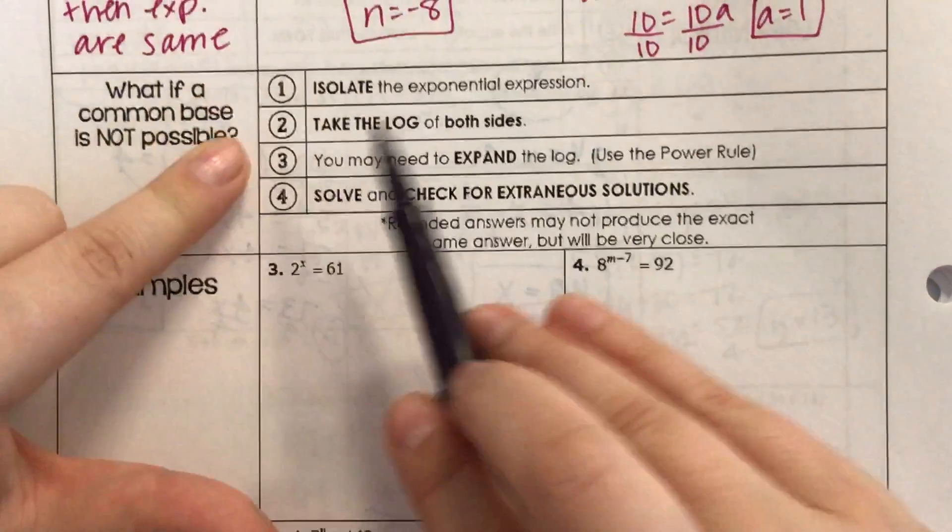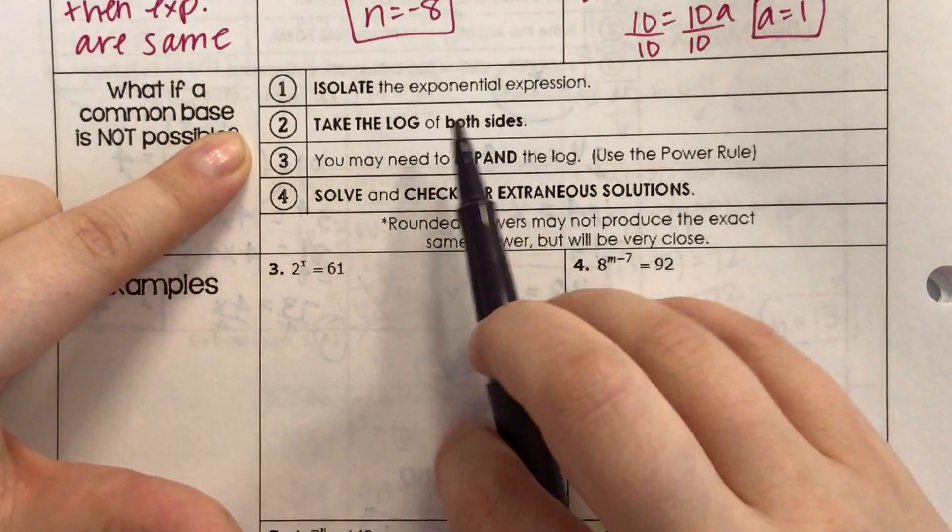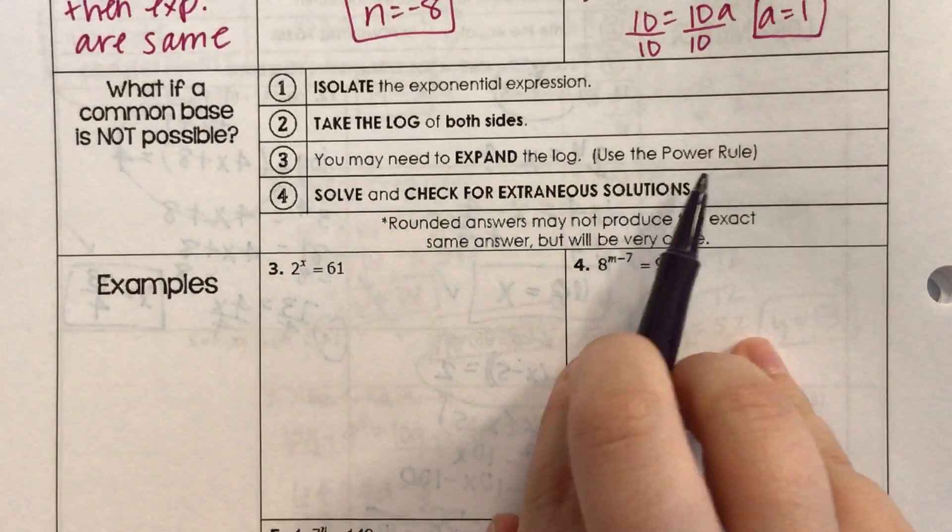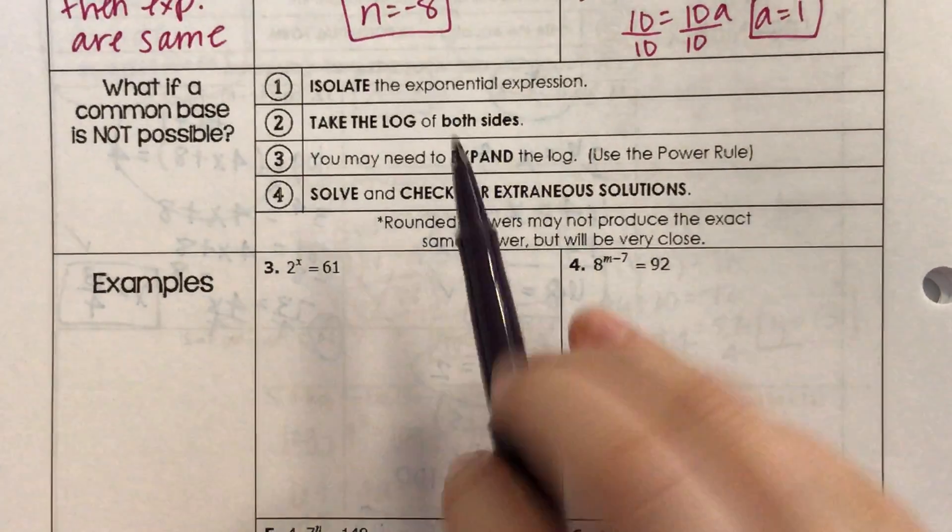Isolate the exponential expression. Take the log of both sides using the log loop trick I taught you. You may need to expand the log using the power rule. Solve and check for extraneous solutions.